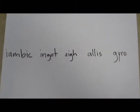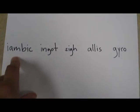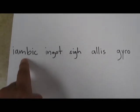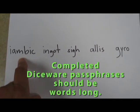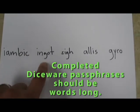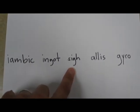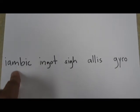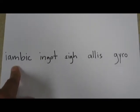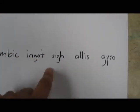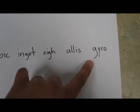So when you get your five words, string them together and write them out. This is your diceware passphrase. And when you pick five different words, that's a very, very strong and secure password. We have these five random words. Iambic, ingot, sigh, allis, gyro.